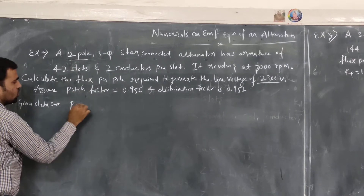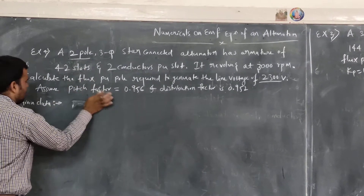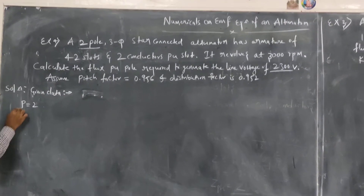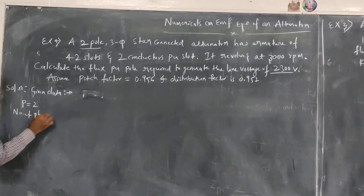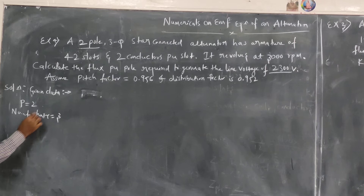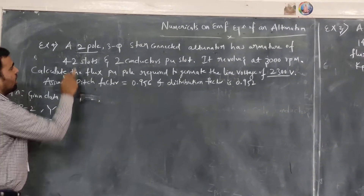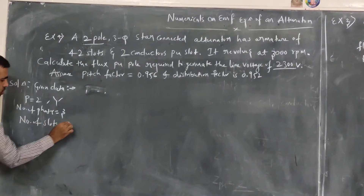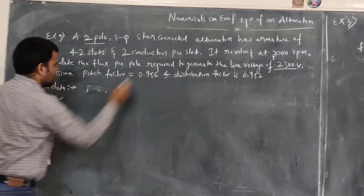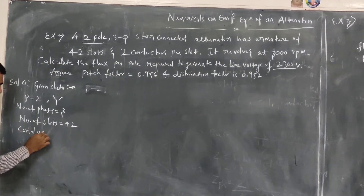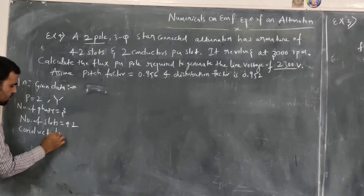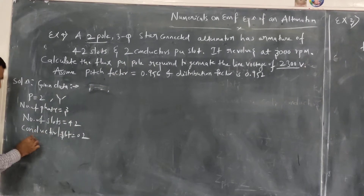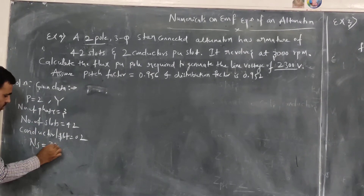Given data: 2-pole, so P = 2; 3-phase, star-connected, so number of phases = 3; armature having 42 slots, so number of slots = 42; 2 conductors per slot, so conductors per slot = 2; and it revolves at 3000 rpm, so the speed N = 3000 rpm.